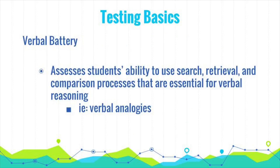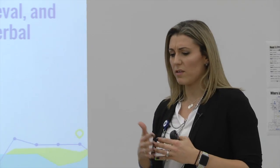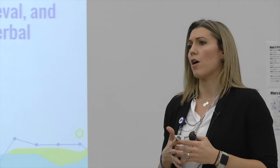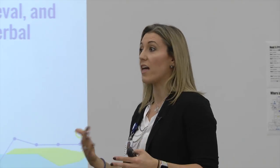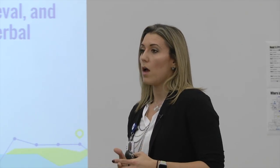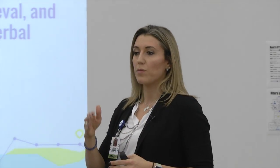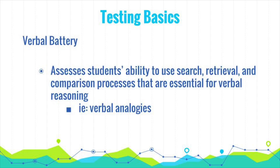The first test you give is the verbal battery. We are looking at search and retrieval. Some examples are sentence completion or verbal analogies — those are the types of subtests that come within the verbal battery.